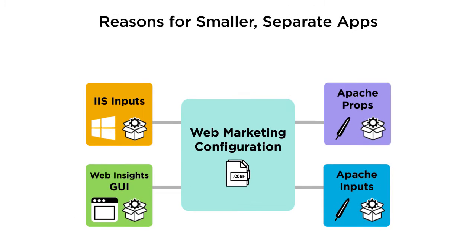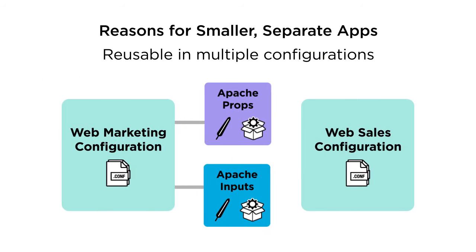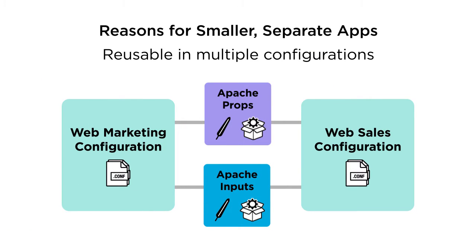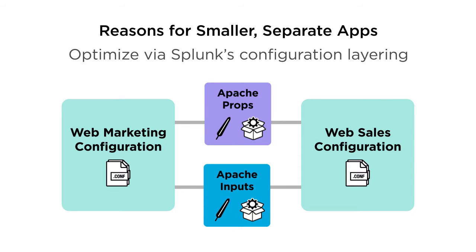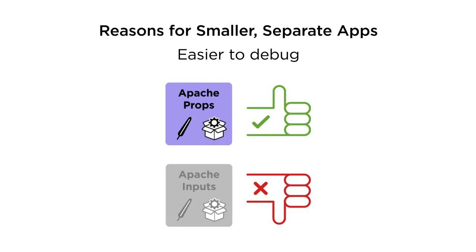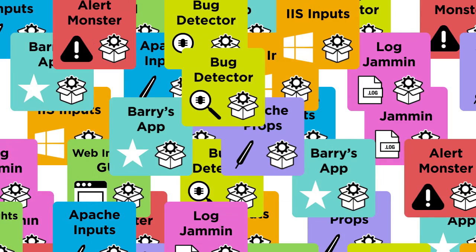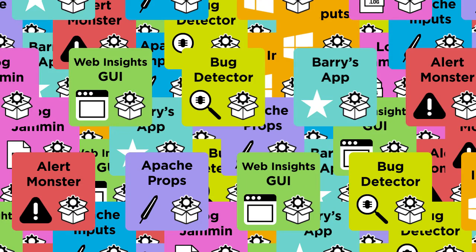There are a few reasons that this is helpful. Smaller apps can be reused in multiple configurations. They let you take advantage of Splunk's configuration layering, and smaller apps are easier to debug. Having all these smaller apps can get really messy, and that is where a good naming convention becomes extremely important.